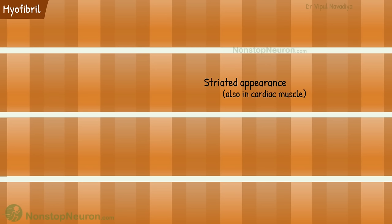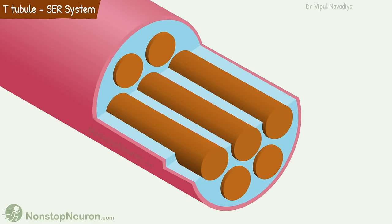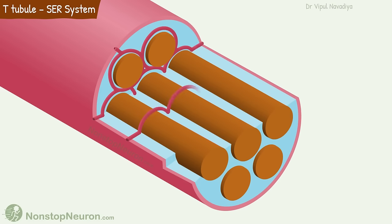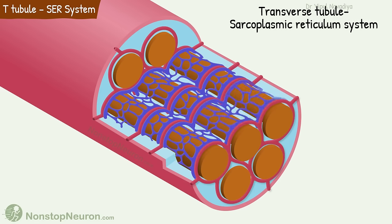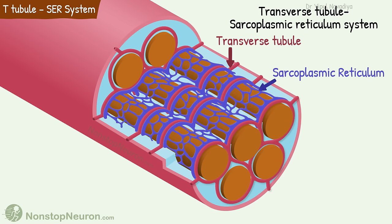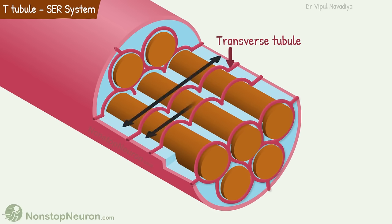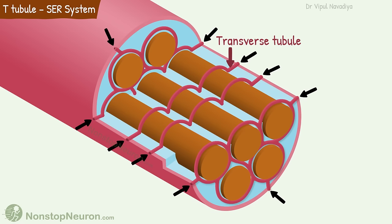This organization also gives skeletal muscles a striated appearance when seen under a microscope. A similar striated arrangement is seen in cardiac muscle, but not in smooth muscles. Surrounding all the myofibrils is a network of tubules called the transverse tubule–sarcoplasmic reticulum system. As the name suggests, it is made up of transverse tubules and sarcoplasmic reticulum. Transverse tubules run transverse to the myofibrils — they are formed by the invagination of the cell membrane and branch to surround all myofibrils.